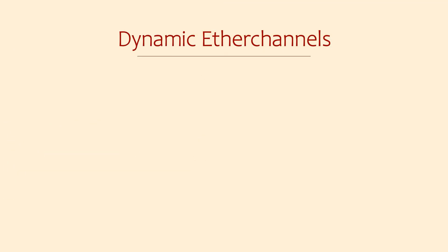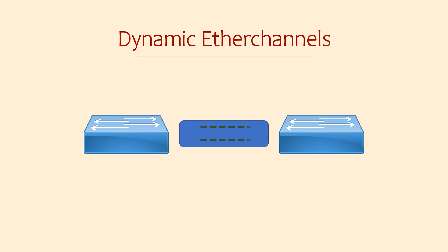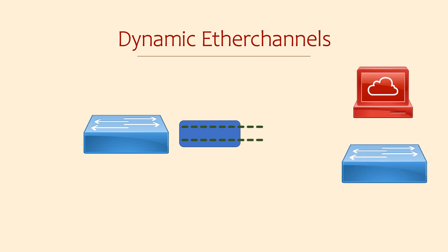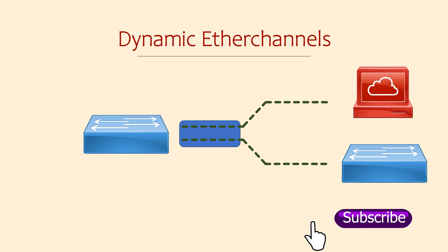We can improve on EtherChannels by making them dynamic. What makes them dynamic? They exchange messages between the two devices to agree on whether an EtherChannel should exist or not. Imagine two switches are connected with an EtherChannel, but someone comes along and moves one of the links to a different device. EtherChannels are intended to be between two devices only. If this were configured as a manual EtherChannel, our switch would continue forwarding traffic over the link assuming the other end is also correctly configured.